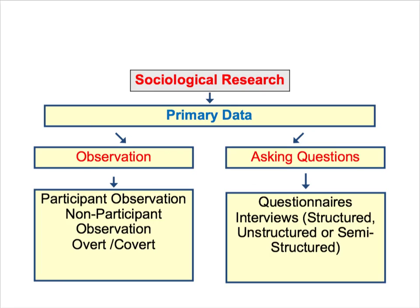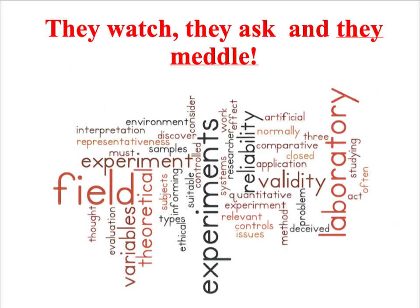They either watch people, so they use various types of observation, or alternatively they ask people questions, and there are different techniques for doing that. But also there's a third way of doing research — they also meddle. What I mean by this is that the researcher might choose to change or manipulate an aspect of their participant's environment in order to assess the effect on their behaviour. And this in very simple terms is what we mean by an experiment.